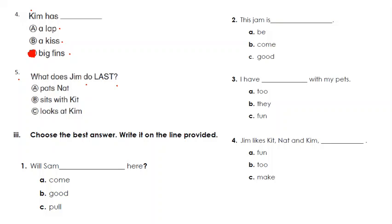Question number five: What does Jim do last, at the end of the story? What does he do? Pats Nat, sits with Kit, or looks at Kim? If you looked at the picture, you can see that at the end he was staring or looking at Kim, Kim the fish.